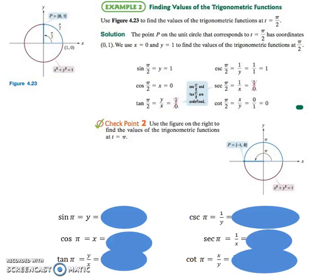So the checkpoint wants us to use t as π and find all of the values. Remember, the whole circle is 2π, so 1π would be over here at 180. And the point on the unit circle would be negative 1, 0.